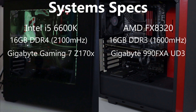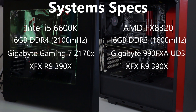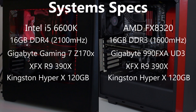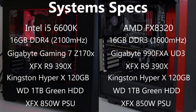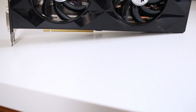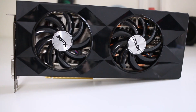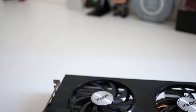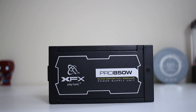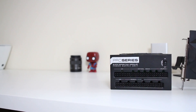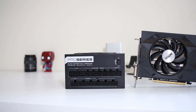Both systems are using the XFX R9 390X graphics card, the same Kingston SSD, the same Western Digital 1TB Green, and the same XFX 850W power supply. Before I show you the comparison, I want to take a moment to thank XFX for supplying me with the awesome R9 390X graphics card and the 850W power supply. Without them, this series would not be possible — all their links are down in the description.